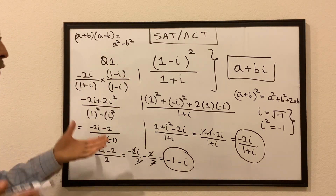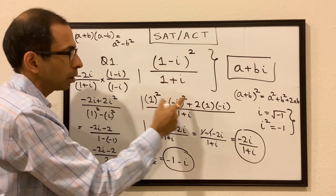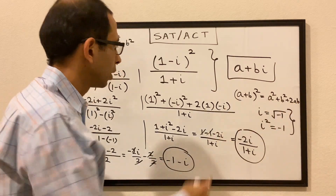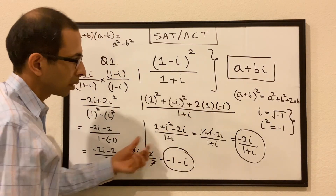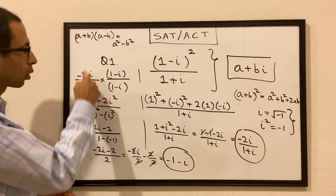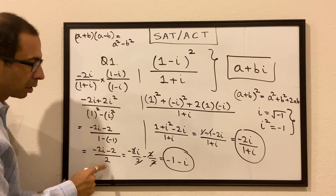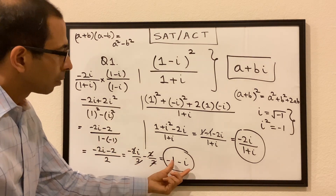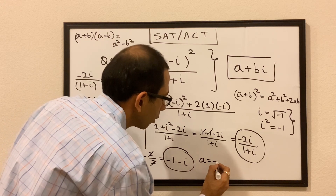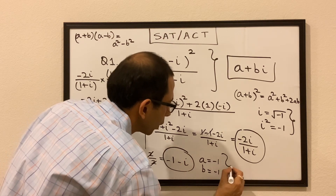To quickly recap: we expanded the numerator using (a + b)² = a² + b² + 2ab, simplified, and then multiplied by the conjugate of the denominator to get rid of i from the denominator. Finally we get -1 - i, so our a = -1 and our b = -1.